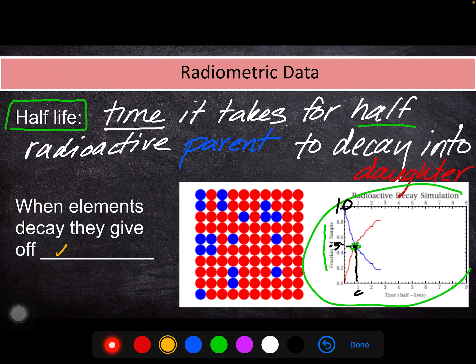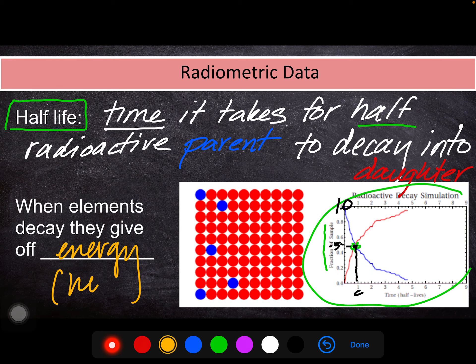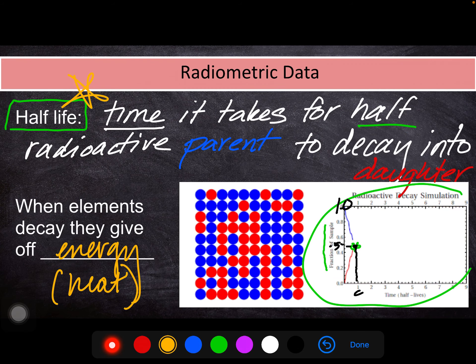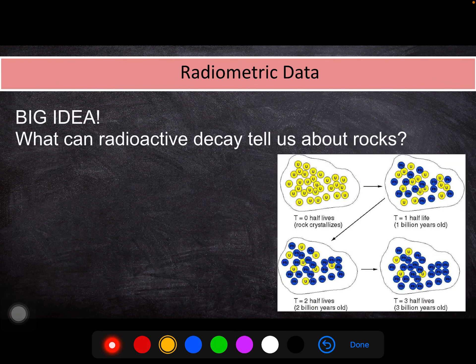So when elements decay, they give off this energy that we sometimes see as heat. But the most important thing is this half-life—time it takes for half of the material to decay. And therefore, it can tell us the age of the rock.